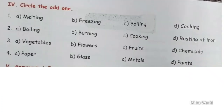Next, number four — circle the odd one out. Question number 1, options are: melting, freezing, boiling, cooking. Melting, freezing, boiling, cooking — the odd one is Option D, cooking, because cooking is a chemical reaction and an irreversible change, while the others are reversible changes.